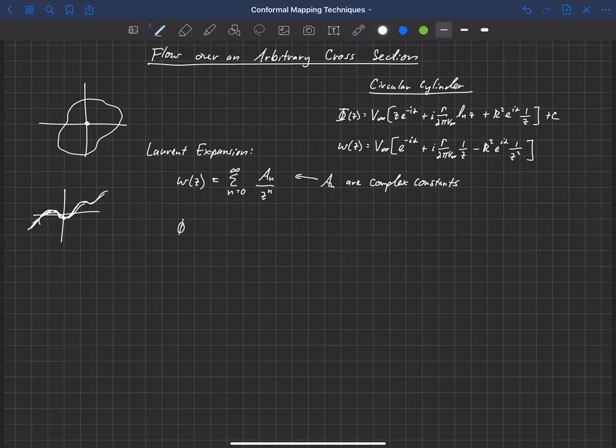So let's look at what capital Φ of z is. It's simply the integral of w of z, which is the complex velocity. So the velocity potential is just the integral of that. So if we just integrate this equation, for the first term, we will get a_0 times z.